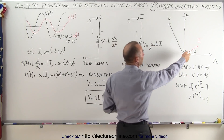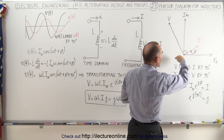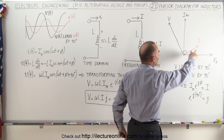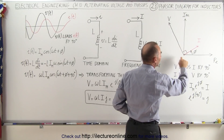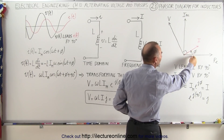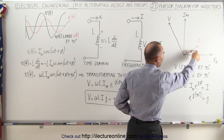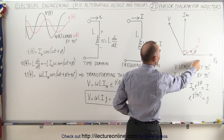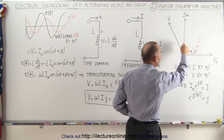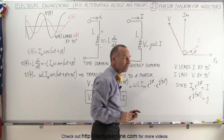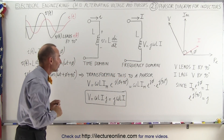These two phasors — the voltage and the current phasor — will rotate as time goes by, but this is a snapshot picture. At time equals zero, there is a phase angle between the real axis and the current of phi, and the phase angle between the real axis and the voltage will be phi plus 90 degrees. Keep that in mind as we look at the rest of the diagrams.